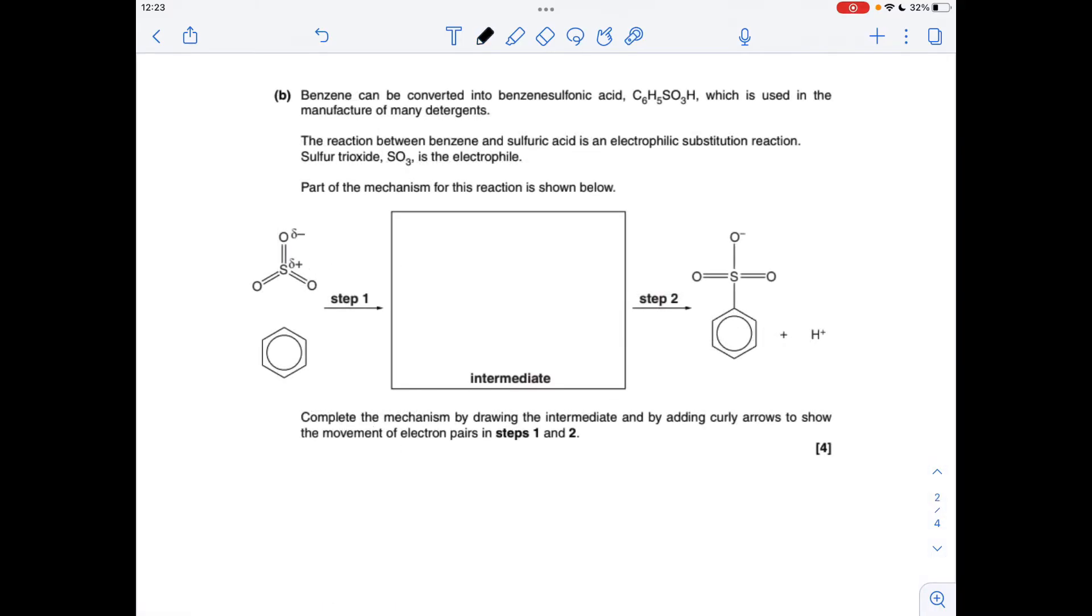Moving on to the mechanism now. So we need to take a pair of electrons from the delocalised ring of pi electrons to that slightly positive sulfur. And that's going to repel a pair of electrons in the pi bond onto the oxygen. That's going to generate this intermediate here. So we're showing the hydrogen now that's at the top there. And all we need to do is just take a pair of electrons, go back into, reform that ring. So that's how we get this back. And obviously how the H plus comes off and is generated.